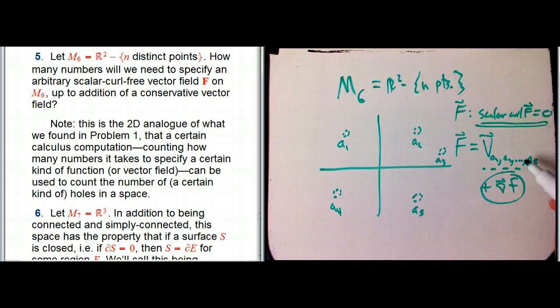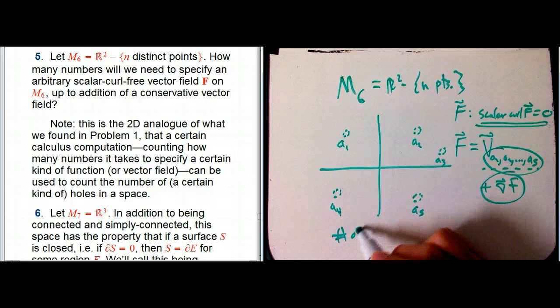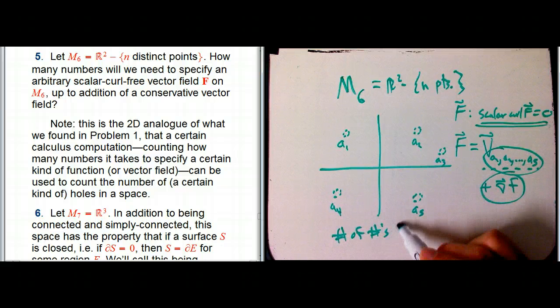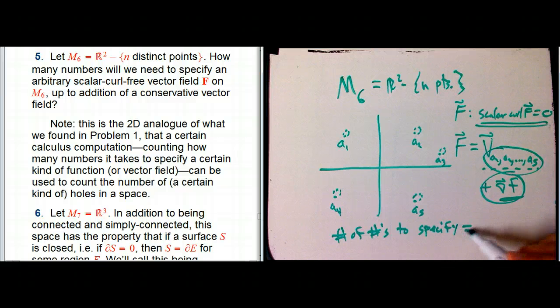So the number of numbers you had to pick, the number of numbers to specify it, up to adding in the stuff that's always the same, adding in the conservative vector field, is equal to exactly the number of holes.